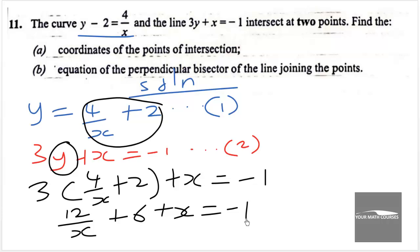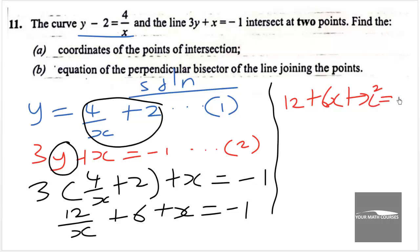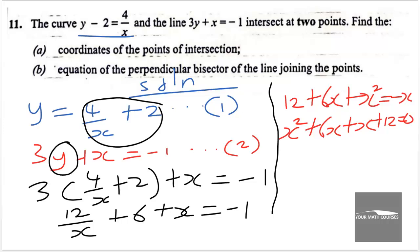We multiply through by x to clear the fraction: 12 plus 6x plus x squared equals negative x. Rearranging into standard quadratic form starting with x squared: x squared plus 6x plus x plus 12 equals 0. Collecting like terms, the negative x becomes positive, giving x squared plus 7x plus 12 equals 0.